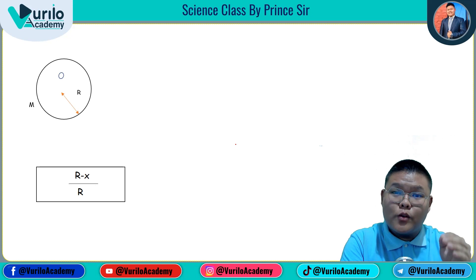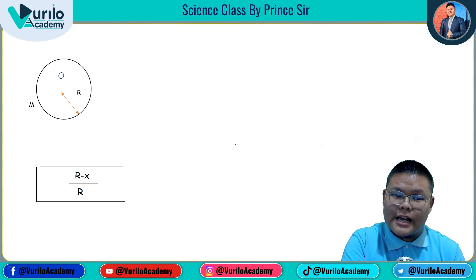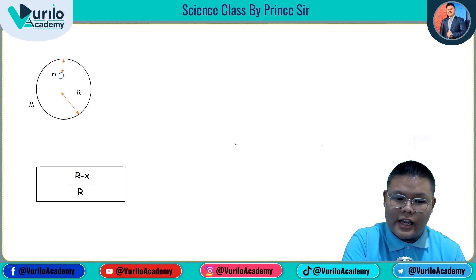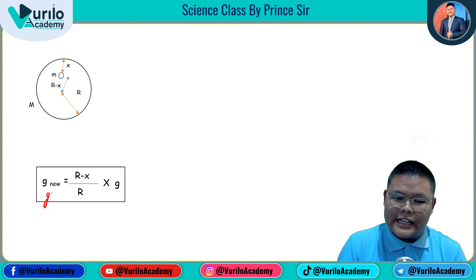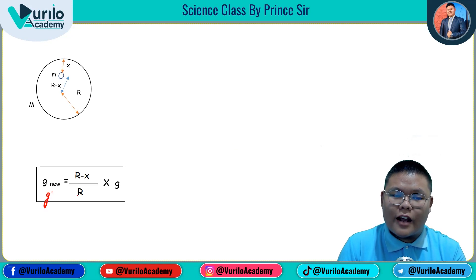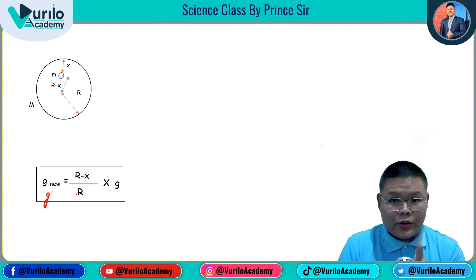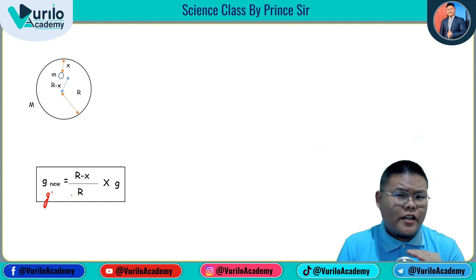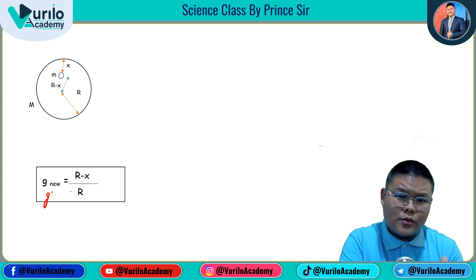For an object at a certain depth below the surface, the formula is: g is equal to (R minus x) upon R, into g. This is the formula for acceleration due to gravity at depth.